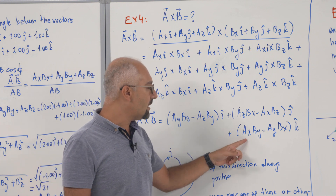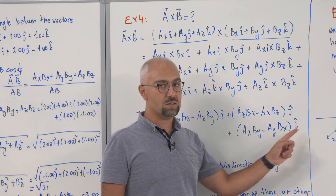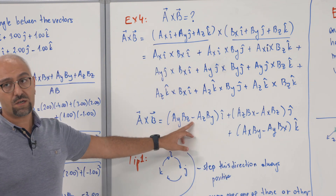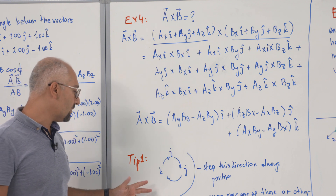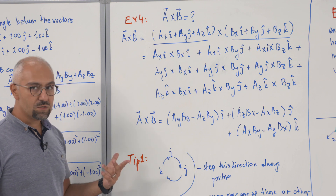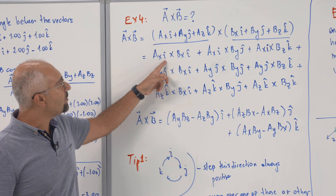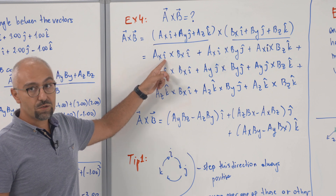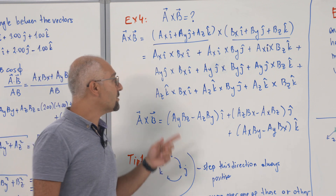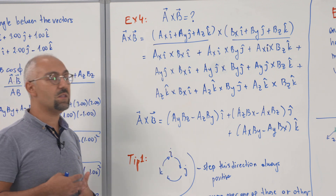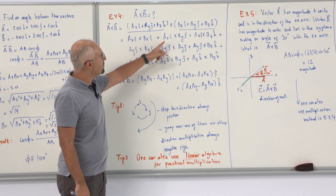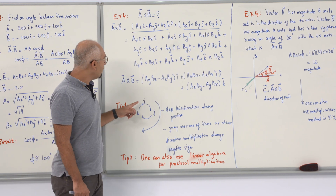The minus signs come from the unit vector cross product rules. When you multiply a unit vector by itself — for example i×i — the result is zero because the sine of the angle between parallel vectors is zero. So all terms like i×i or j×j vanish.